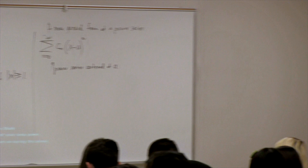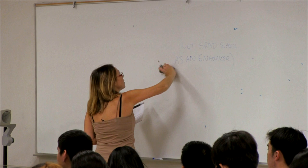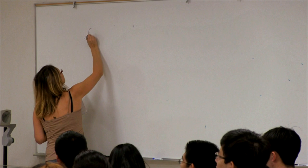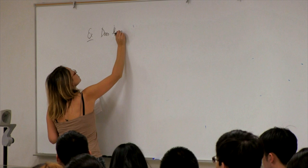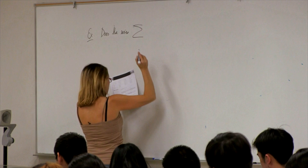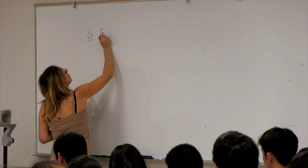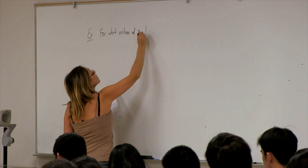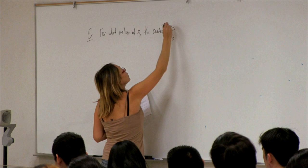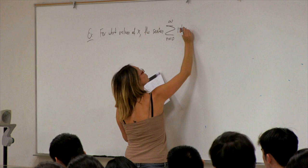The very important tool is going to be the ratio test. Let's look at the first example: for what values of x does the series given by n factorial times x to the n converge?